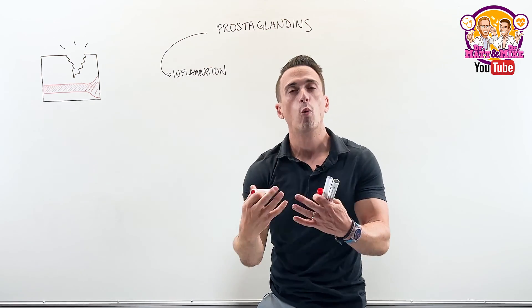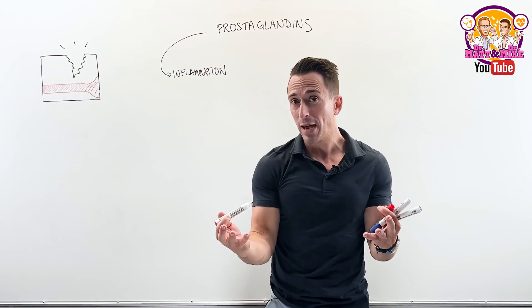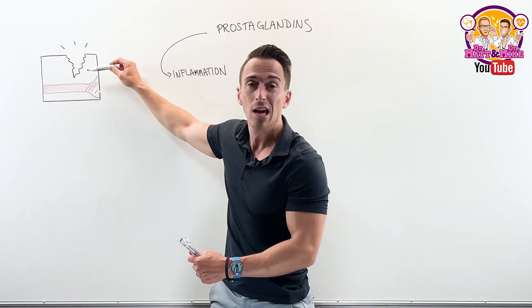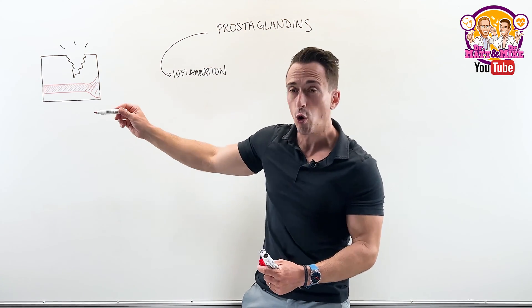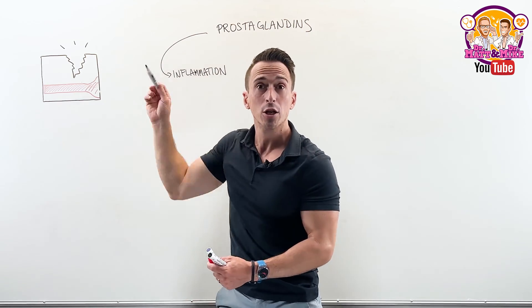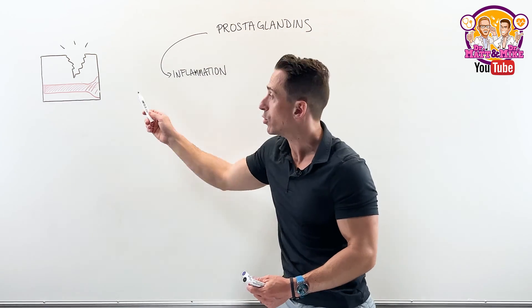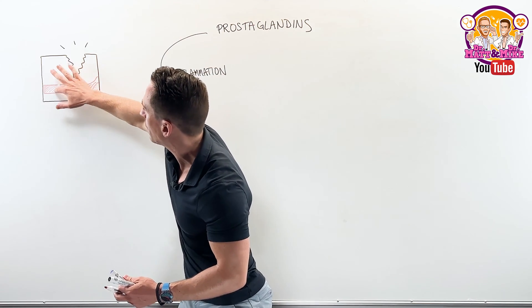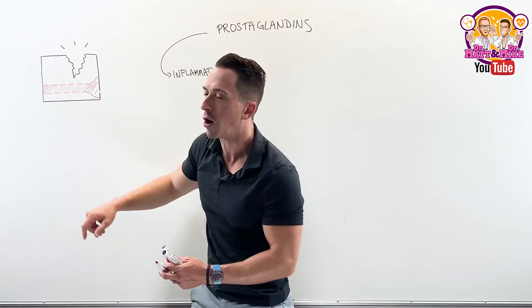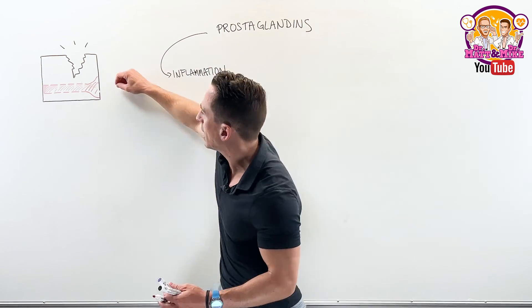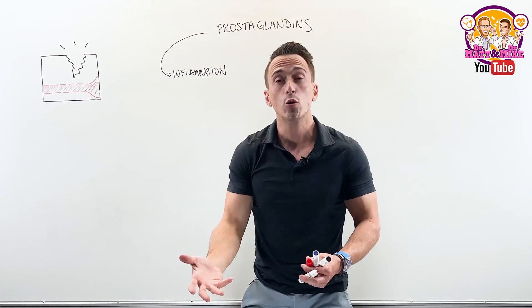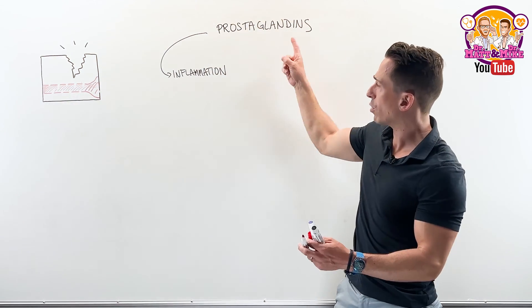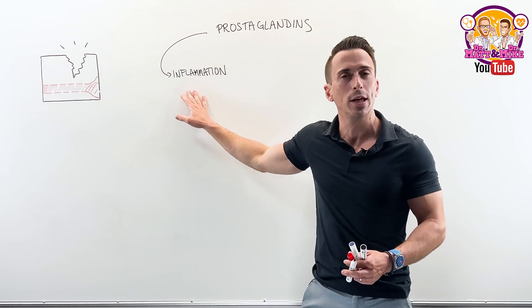If more blood gets to the area, more white blood cells — the immune cells — get to the area. They can fight off bacteria that may have invaded, viruses, or clean up damaged cells. Prostaglandins also make the blood vessel a little bit leaky by putting some holes in it, so these leukocytes traveling in can leak out and clean up that area.